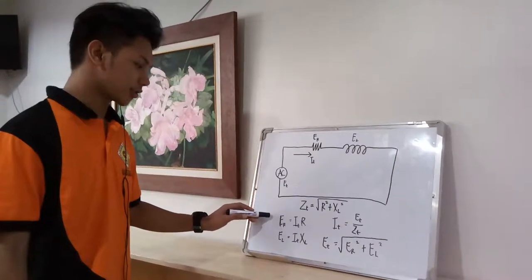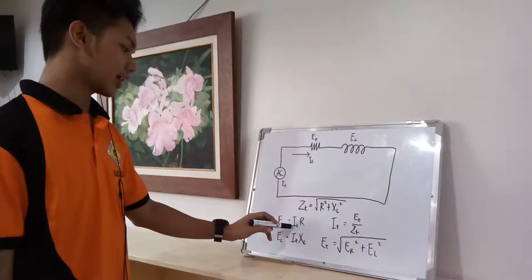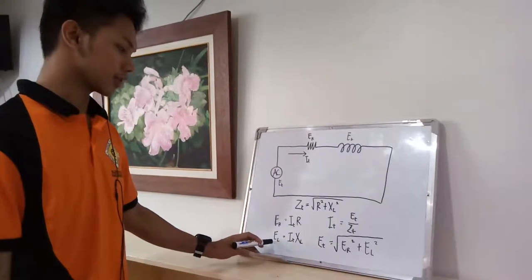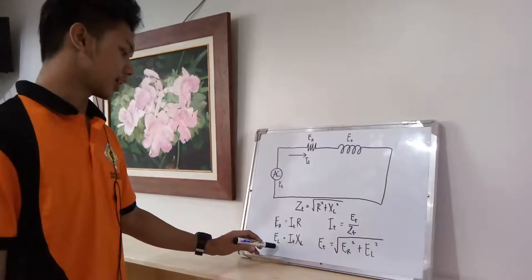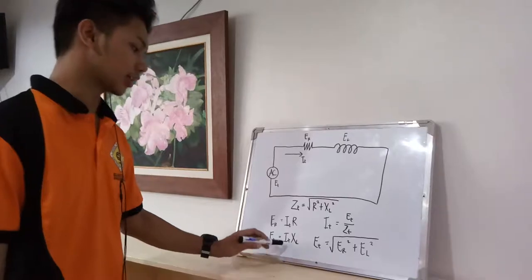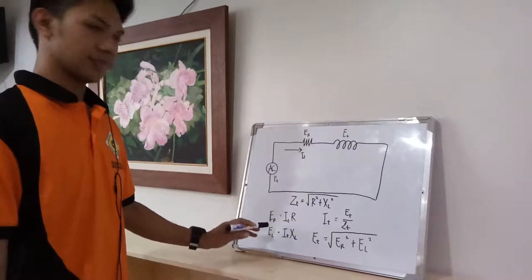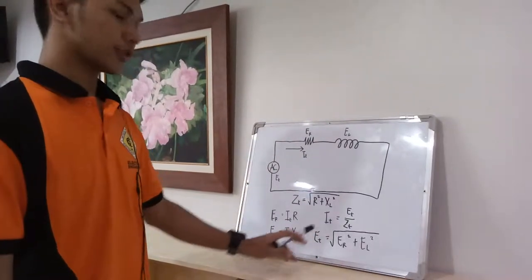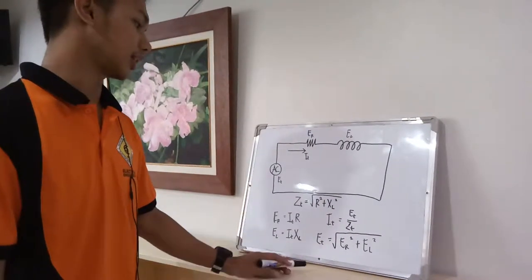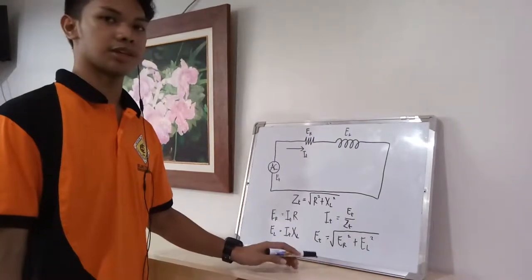For getting the voltage drop across the resistor, we have the formula E sub R is equal to I sub T times R. For getting the voltage drop across the inductor, E sub L is equal to I sub T times X sub L, where I sub T is the total current and X sub L is the inductive reactance 2πFL. For getting the total current, we have I sub T is equal to E sub T over Z sub T, where E sub T is the total voltage and Z sub T is the total impedance.